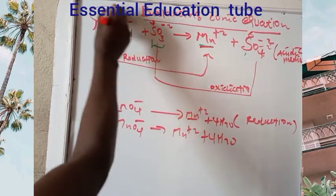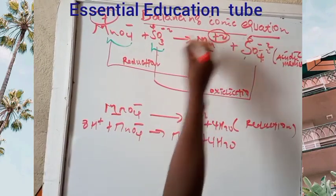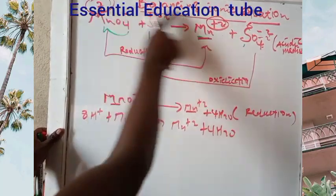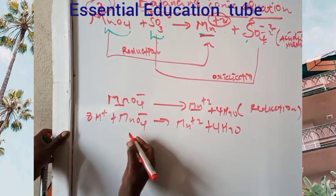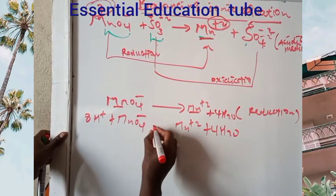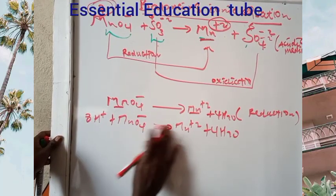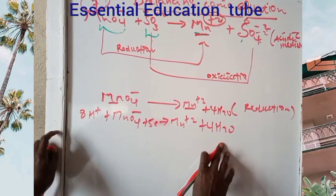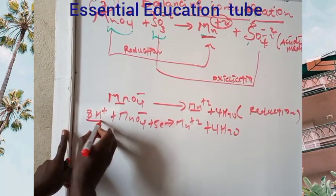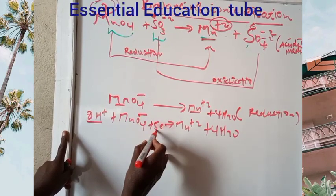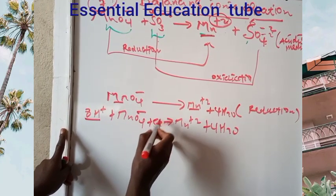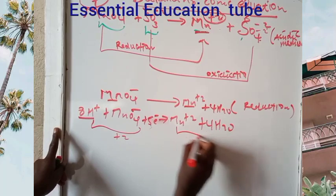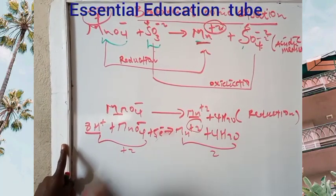So the reduction half-reaction is: 8H⁺ + MnO4⁻ → Mn²⁺ + 4H₂O. Manganese goes from +7 to +2 — that is a gain of 5 electrons. So we add 5 electrons to the left side. Checking charge: positive 8 minus 1 equals positive 7, minus 5 electrons gives +2. This is balanced.